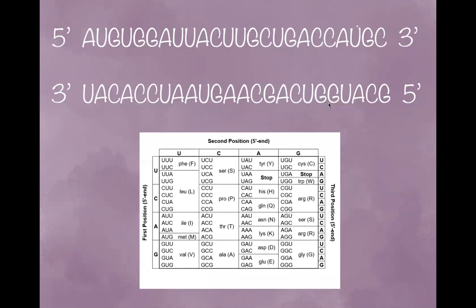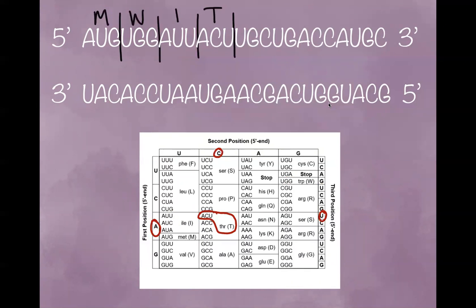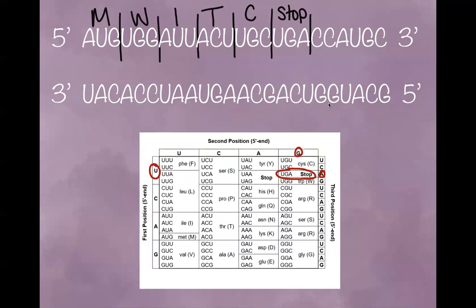Here is our starting codon. Now let's find the stop codon. UGG gives us W. AUU gives us I. ACU gives us T. And UGC gives us C. And here's our stop codon.